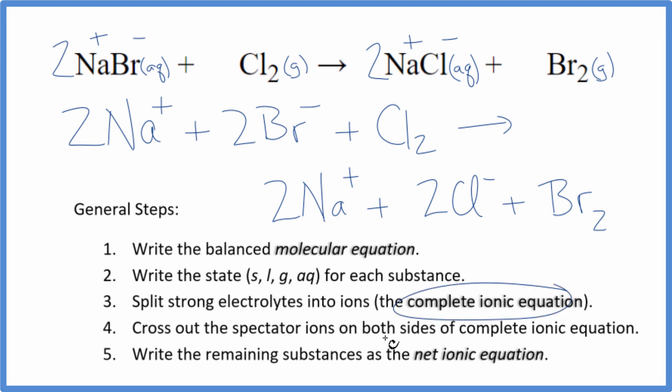Now that we have this complete ionic equation, we can cross out the spectator ions. They're on both sides. The only thing that's on both sides here are these two sodium ions. I have them in the reactants and then in the products. These are spectator ions. We can get rid of those.